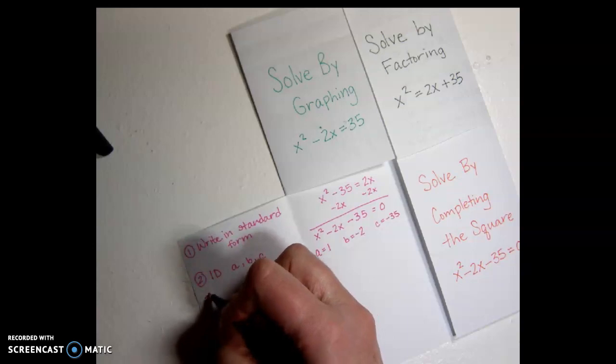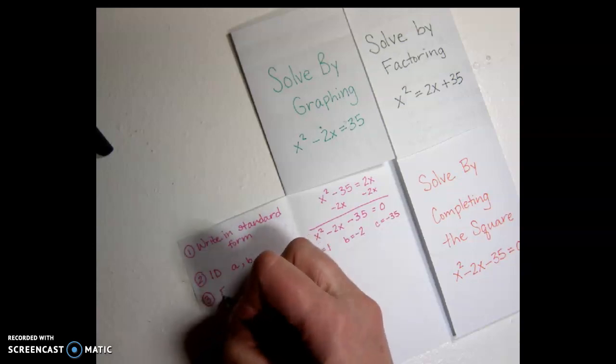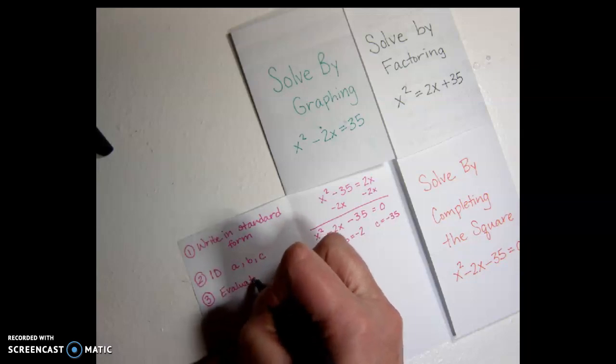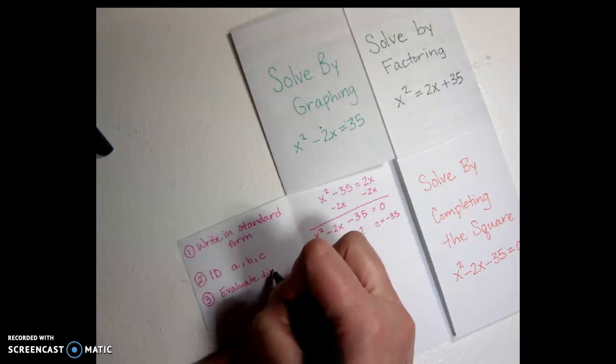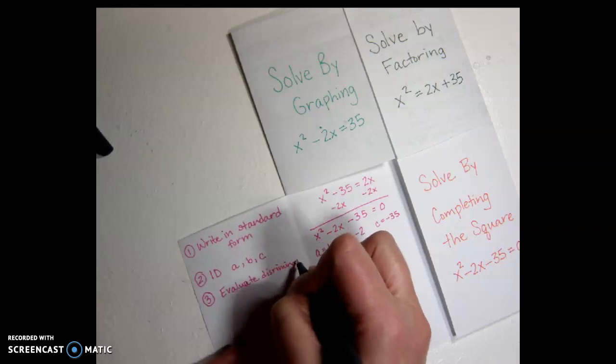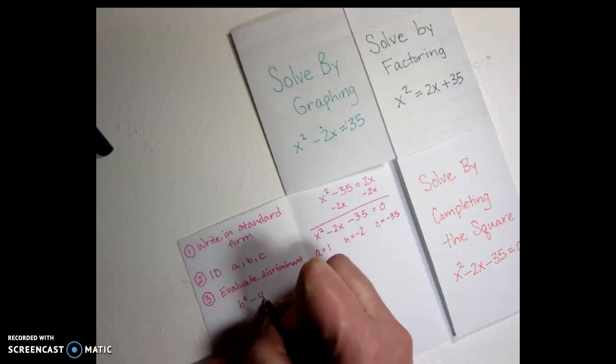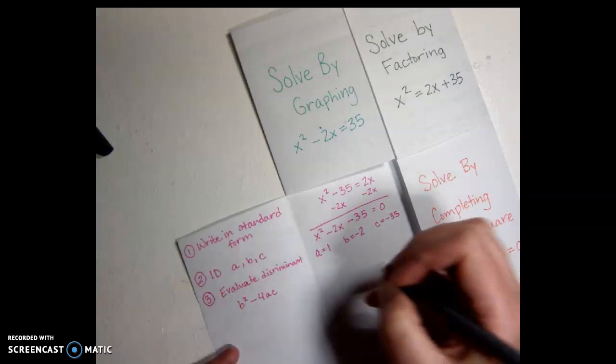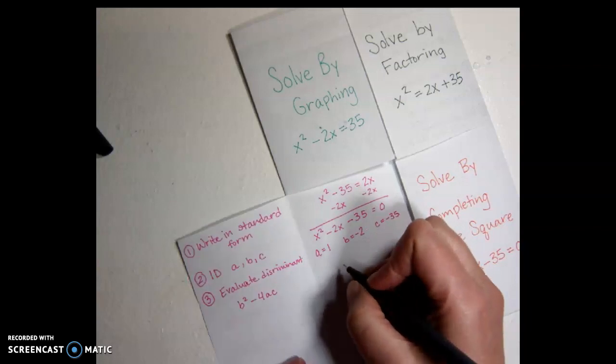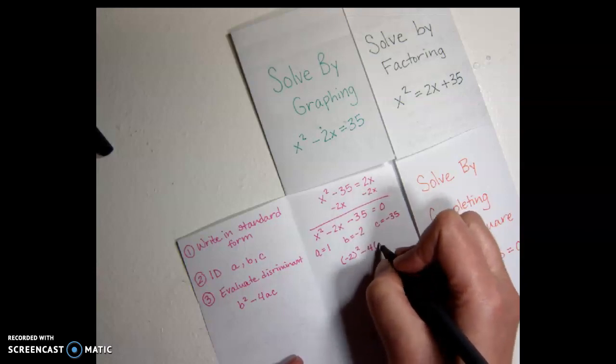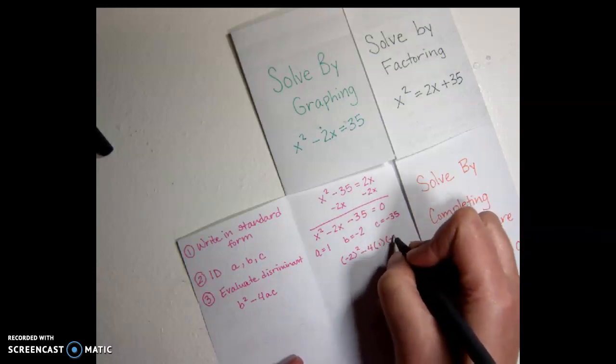The next thing we're going to do is evaluate the discriminant. The discriminant is b squared minus 4ac. Okay, so our discriminant for us would be negative 2 squared minus 4 times a times c.